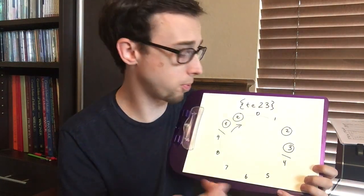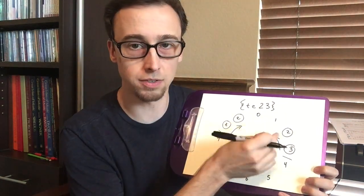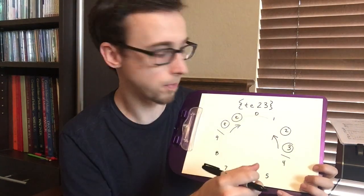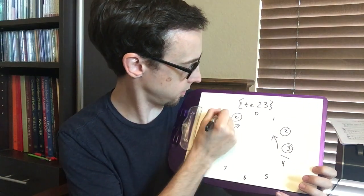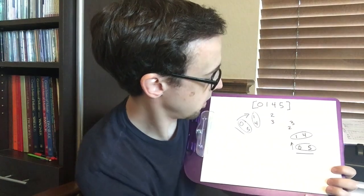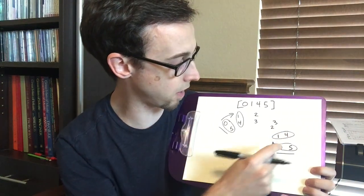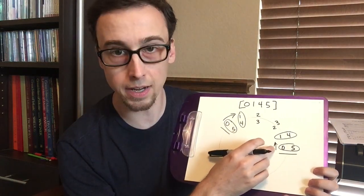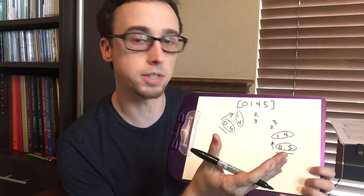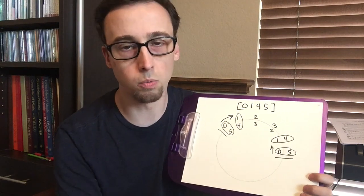When we're finding our prime form it actually doesn't matter which way we read it because we'll get the same intervals. We'll get a half step, a minor third, and then another half step. So we can actually make either this zero or this zero. Here's making that t zero: zero, one, then four, five. Or if we were to start on that three, it's still going to be 0145. So with a symmetrical set it doesn't matter which way you go, you'll still get the same prime form of 0145.